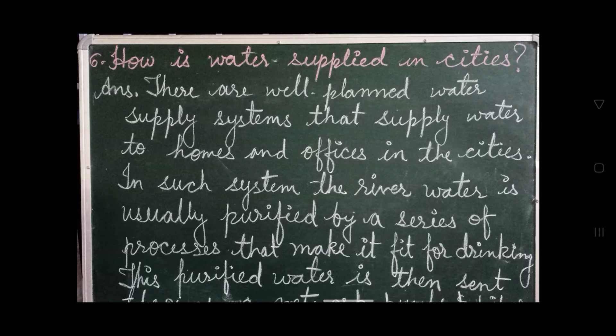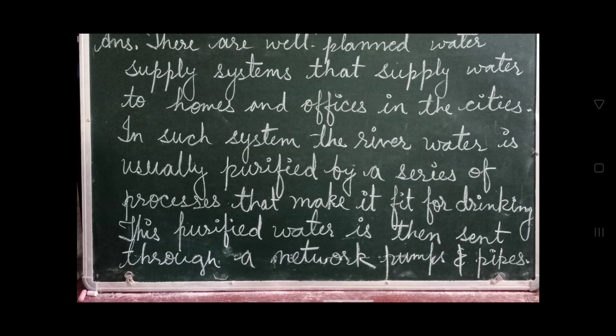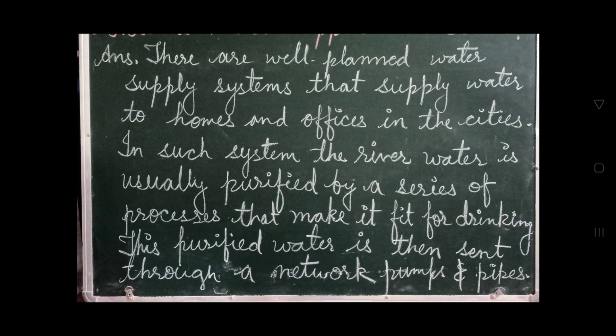Question number 6, the last question of this chapter: How is water supplied in cities? Answer: there are well-planned water supply systems that supply water to homes and offices in cities. In such systems, river water is usually purified by a series of processes that make it fit for drinking. This purified water is then sent through a network of pumps and pipes.